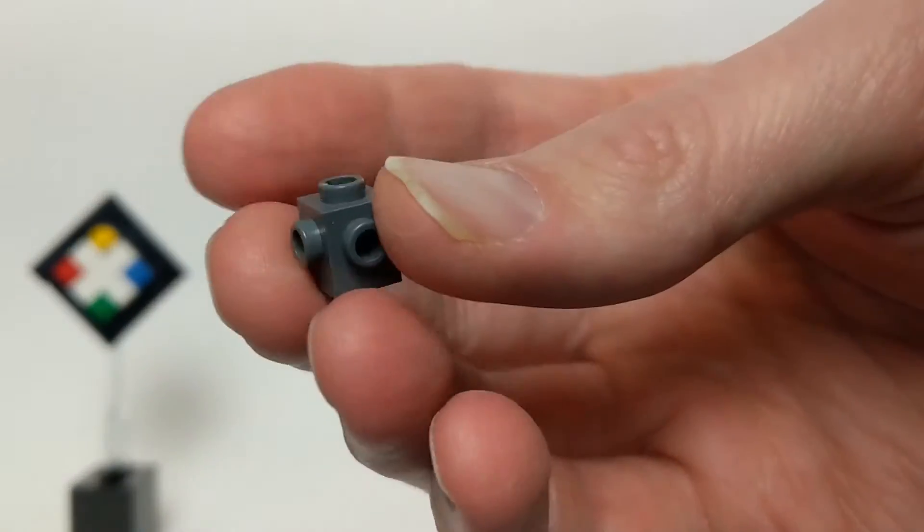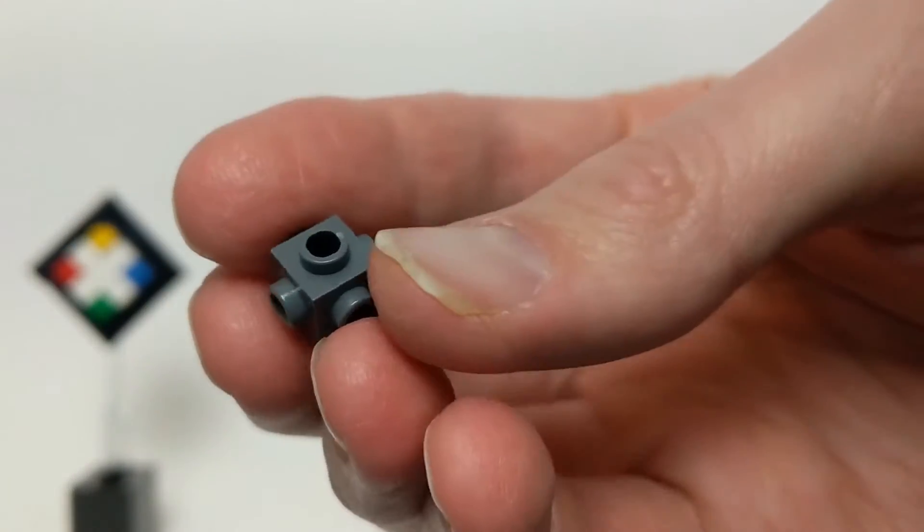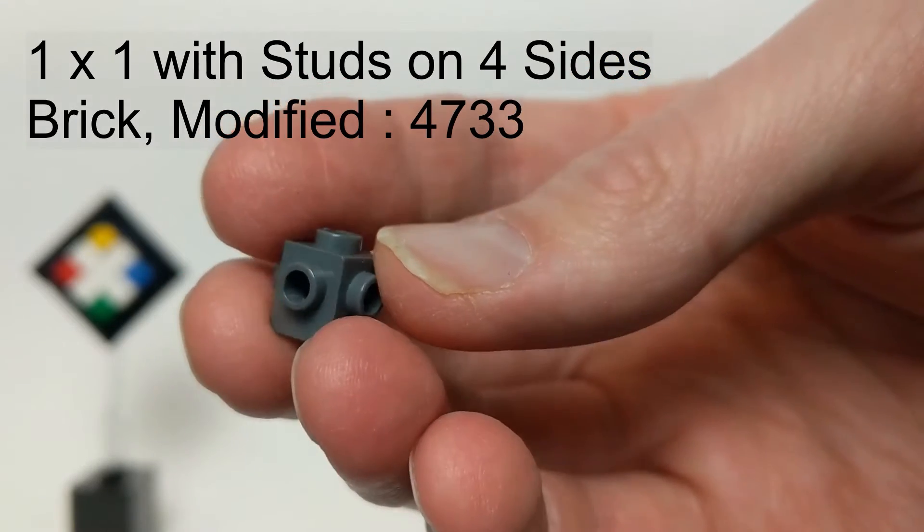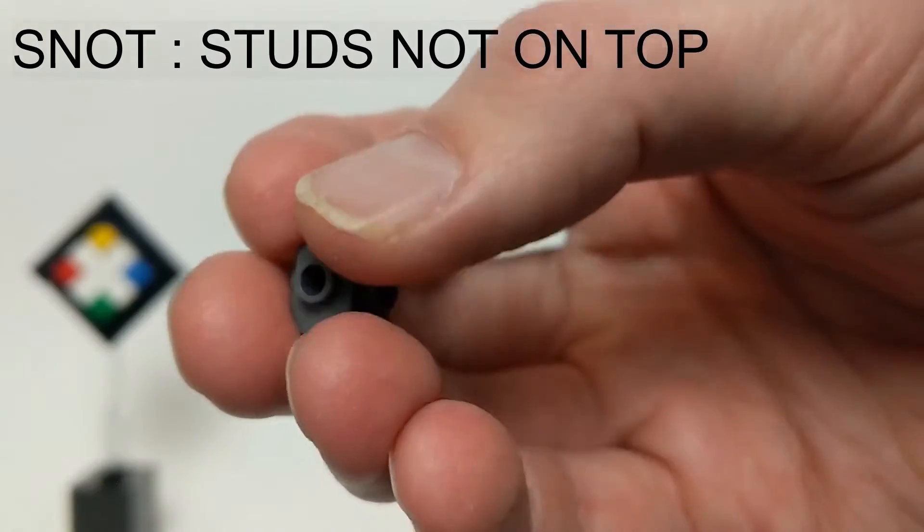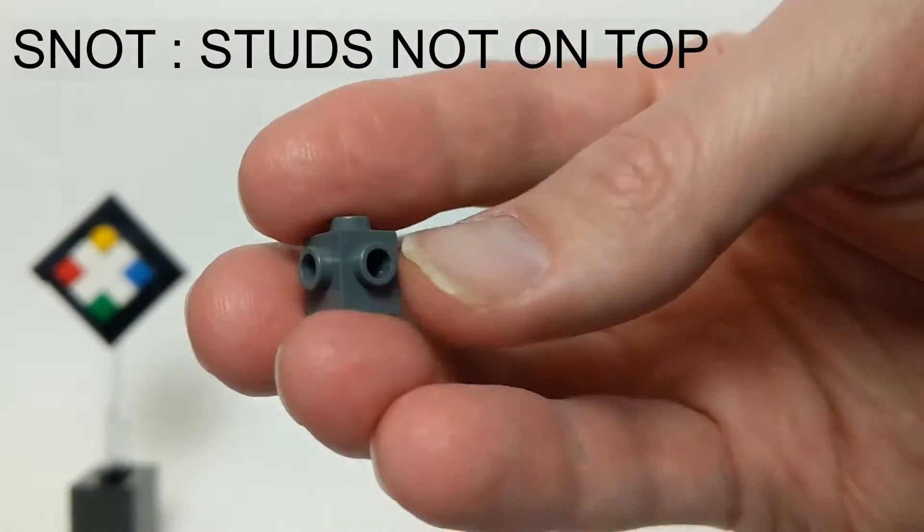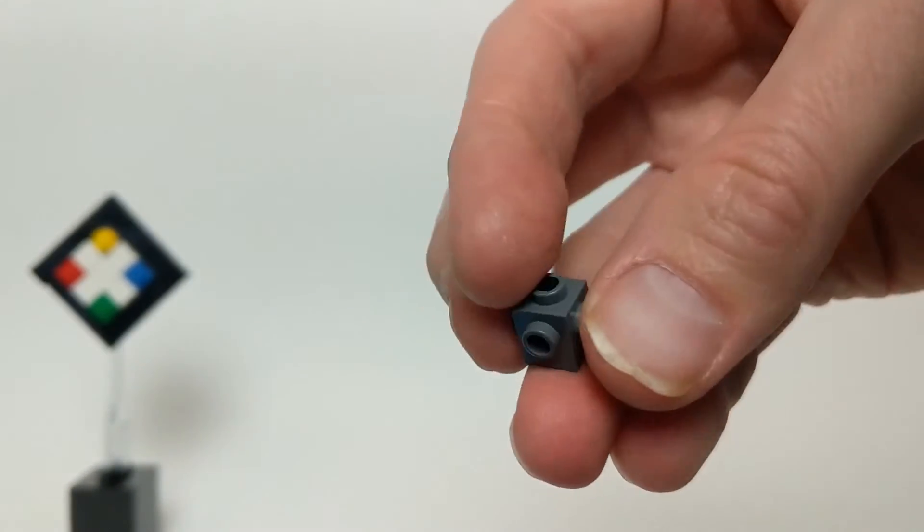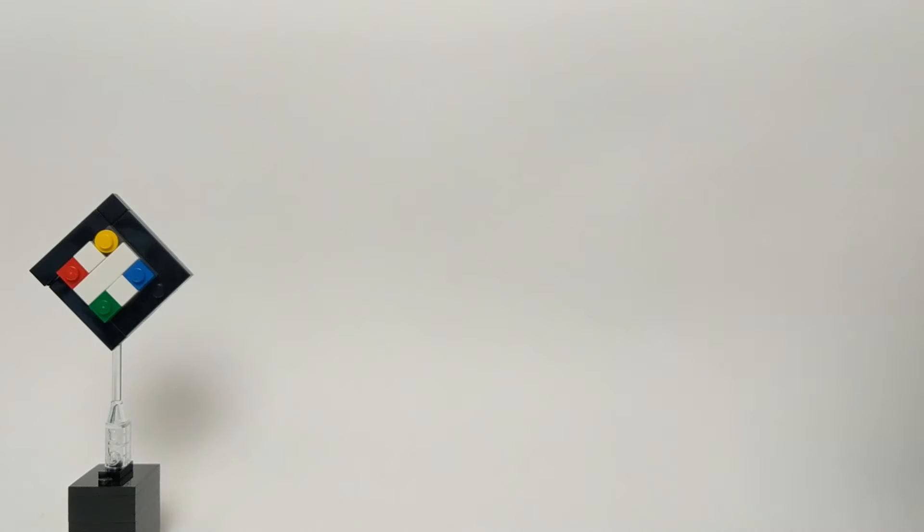For this one, we're going to use one of these Travis bricks, which is a SNOT type of brick or studs not on top brick, where they have studs on every side except the bottom. We're going to use this to create a very awesome small sphere designed by a builder called Umamin.